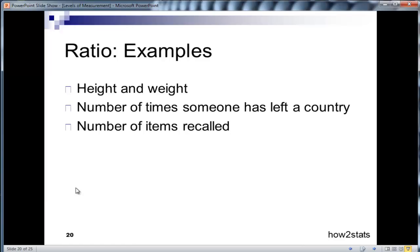Number of items recalled on a memory test would be an example of a ratio scale because again, people can score zero on a memory test, particularly if somebody has a head injury.